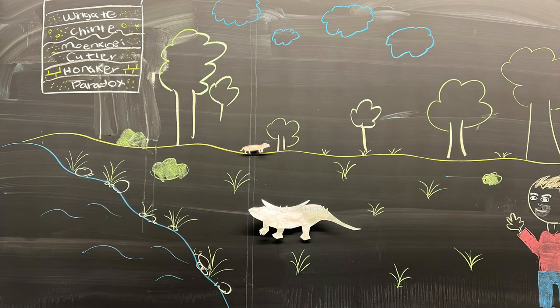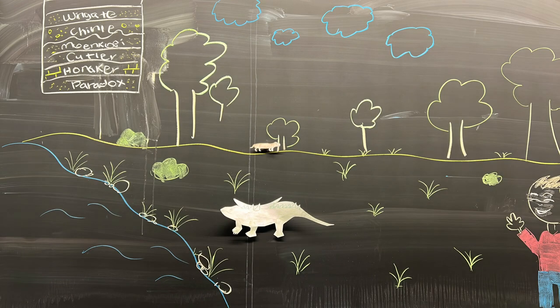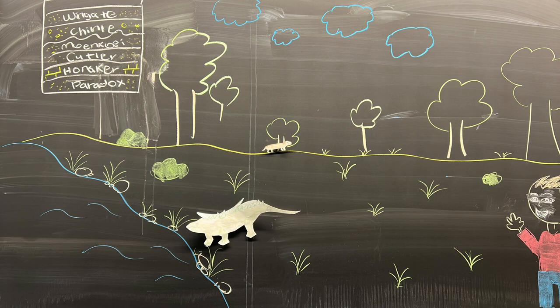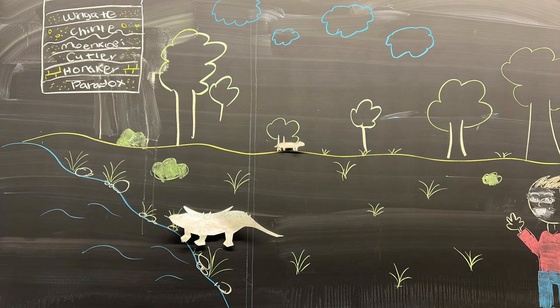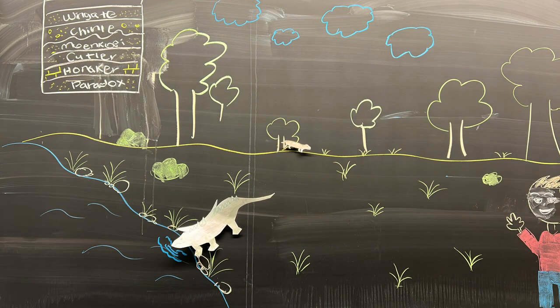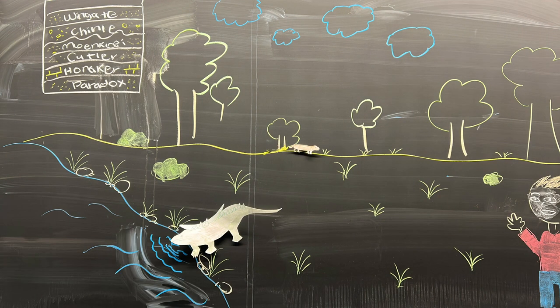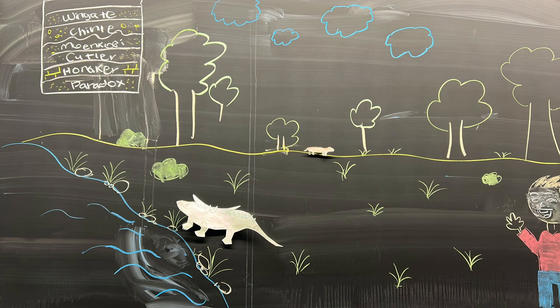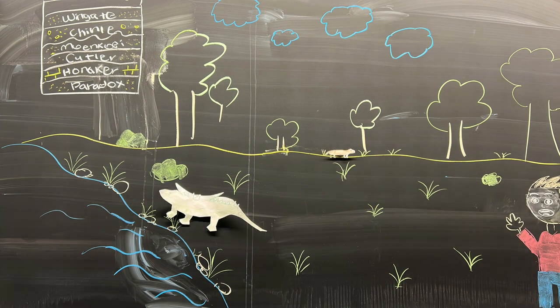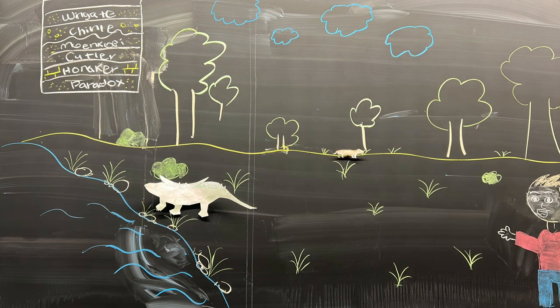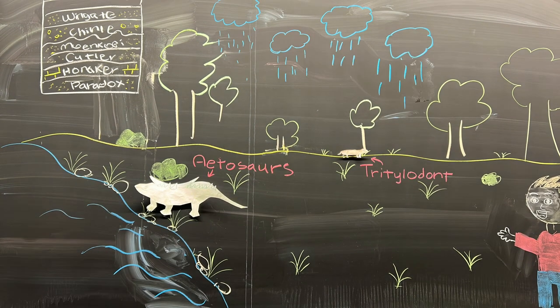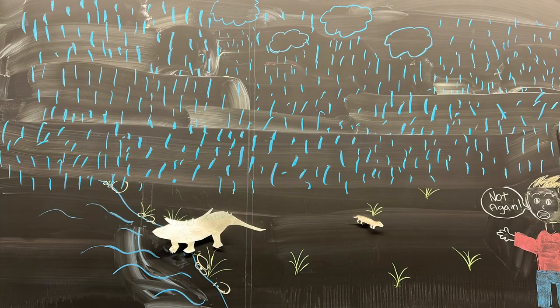On to the late Triassic era. The Chinle Formation is our first terrestrial environment with dinosaurs. Many of the fossils found from this era include dinosaur tracks representing the most abundant track fauna of the Triassic of North America, on species like the aietasaur and tritylodont.